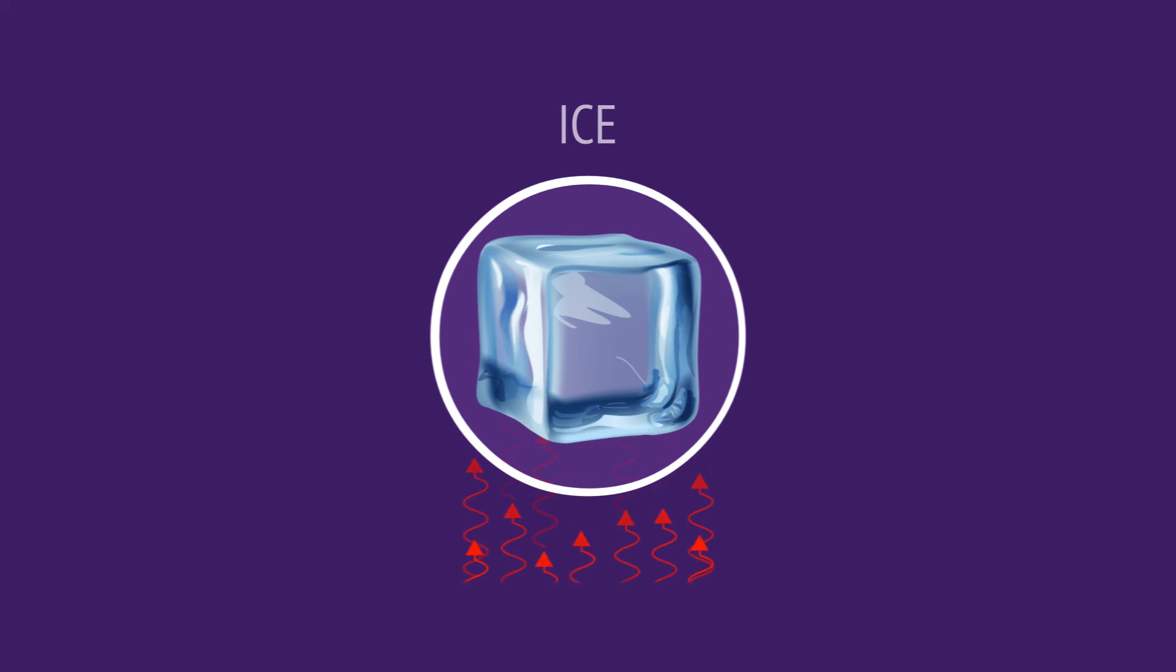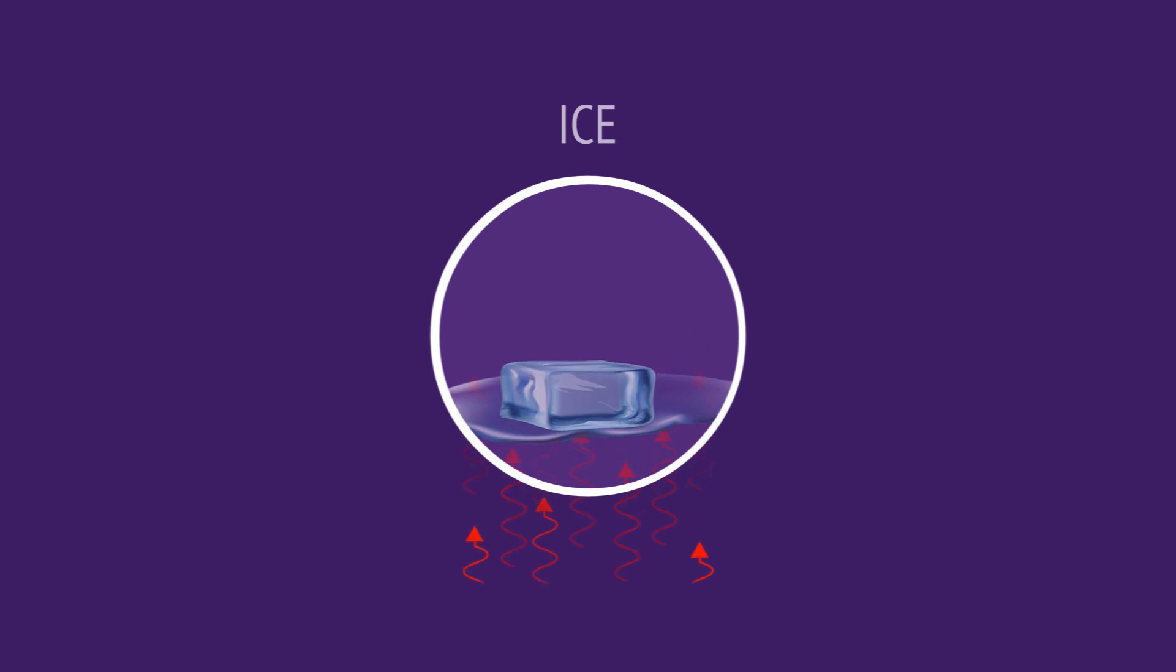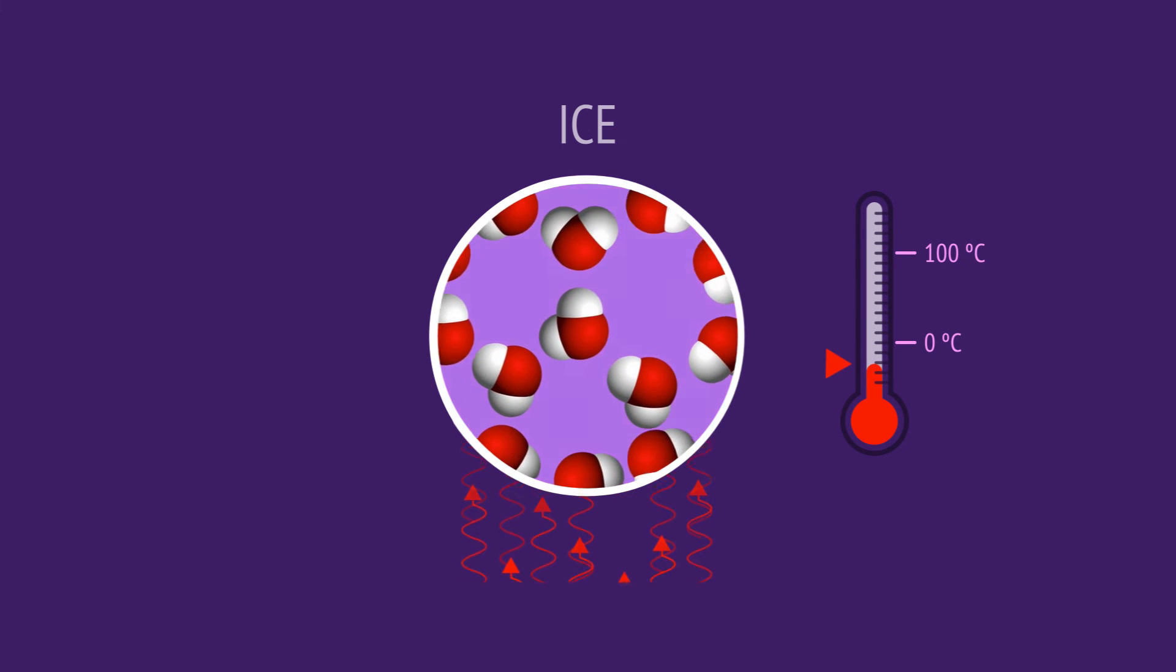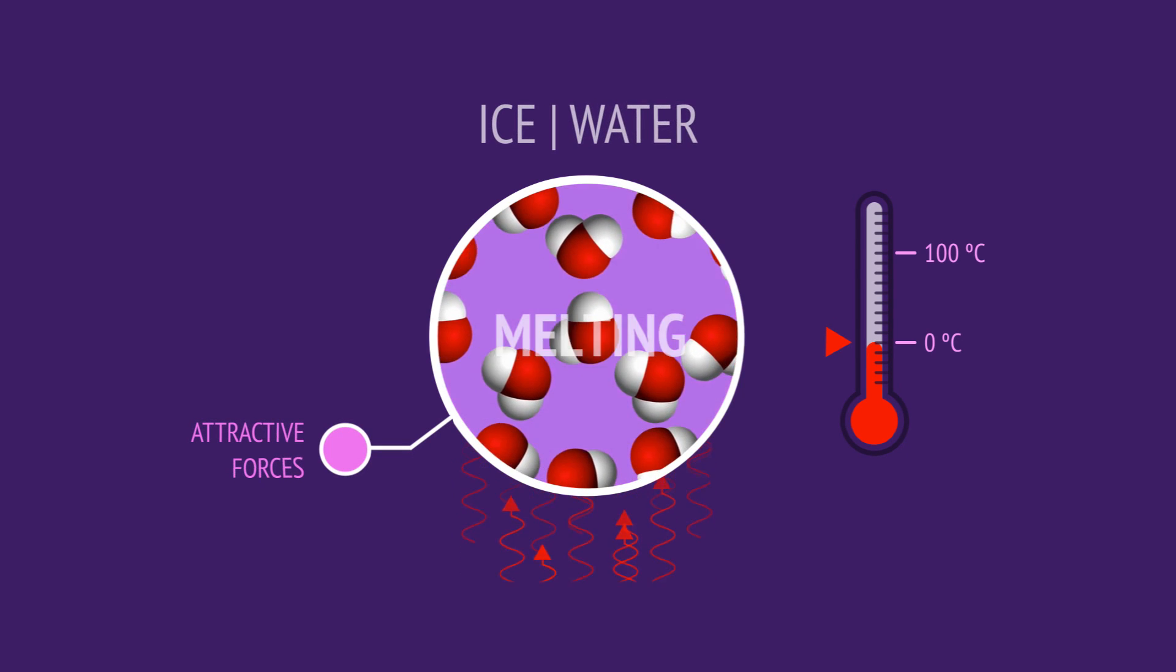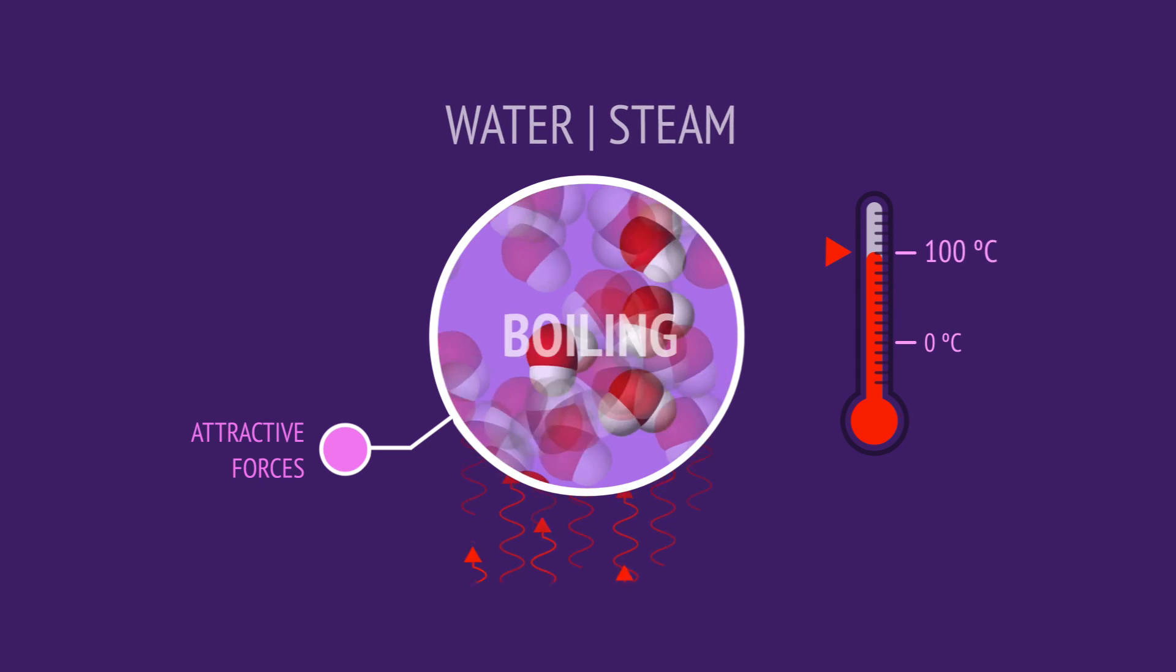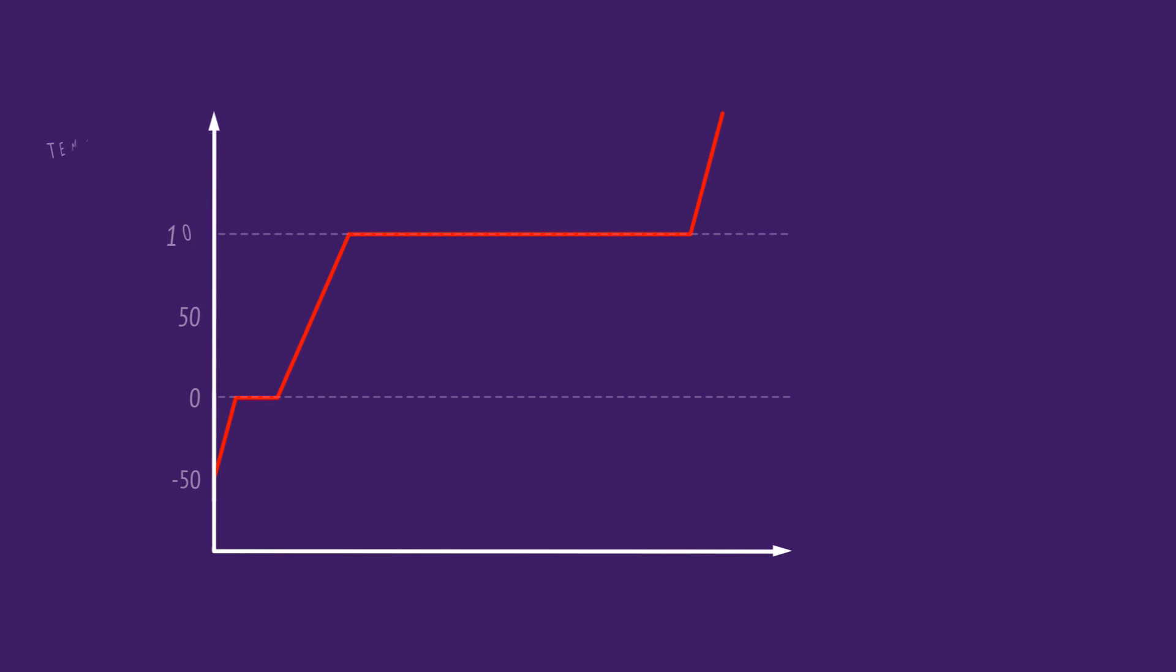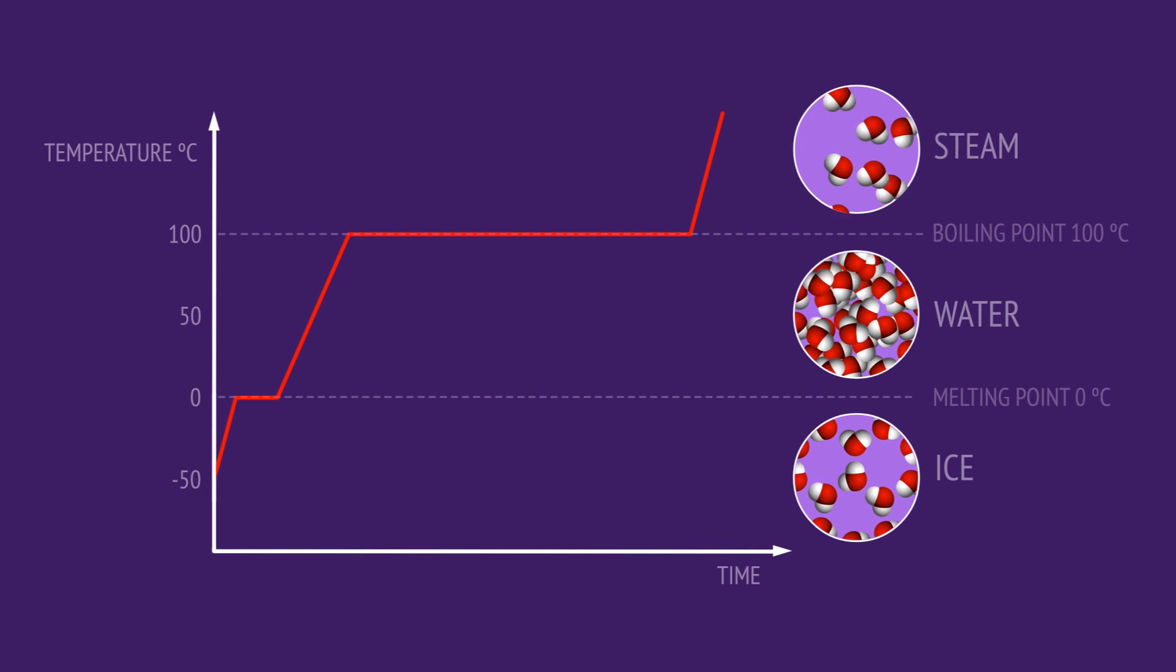So in this video, we've seen the changes that occur at a molecular level when ice is heated. We've seen how absorbing heat increases the kinetic energy of the water molecules and so increases the temperature, and how the hydrogen bonds between molecules are overcome at the melting point and boiling point, and why the temperature remains constant during these processes. Finally, we've seen how all these changes are shown in the heating curve for water.